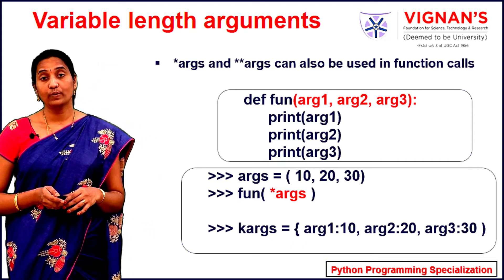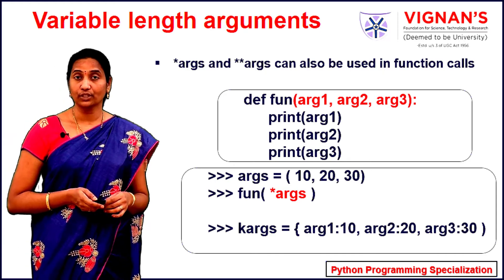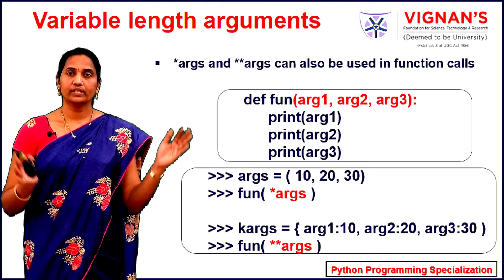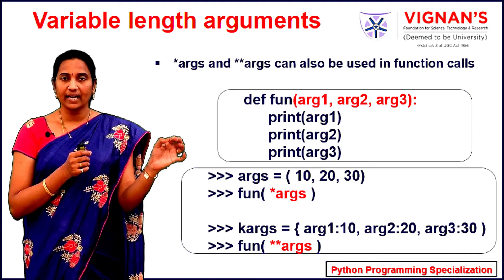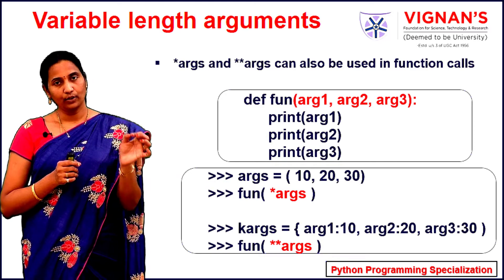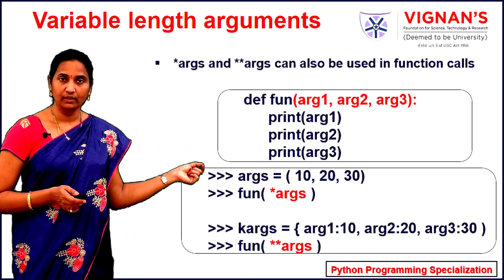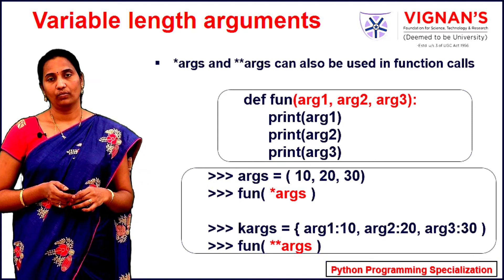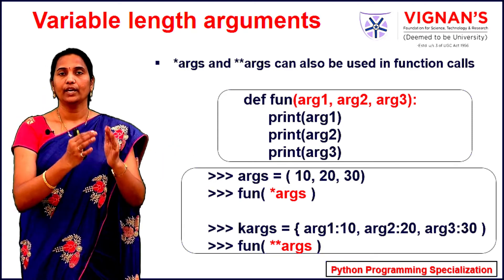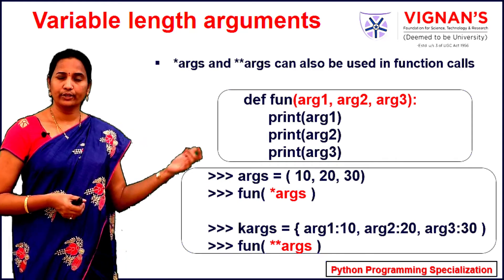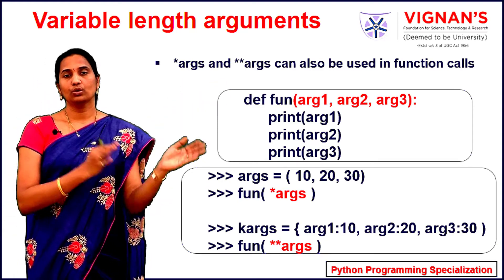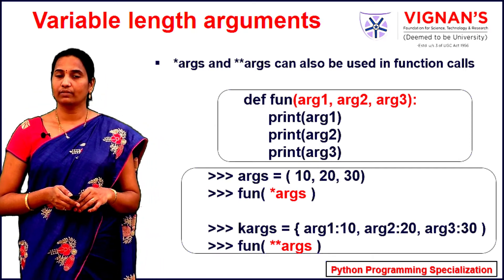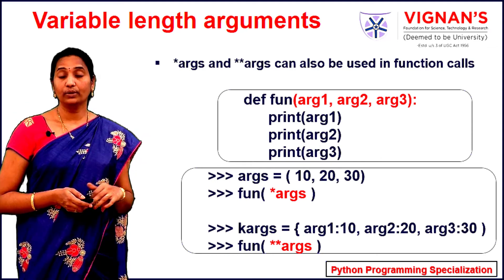Now let's see how we can use variable length keyword arguments during the function call. Here kargs is a variable defined as a dictionary, where every element is a keyword-value pair. By calling the function fun by passing **kargs, the dictionary is unpacked and the values are assigned to r1, r2, and r3. That's how we can use variable length positional arguments and variable length keyword arguments during function calls.